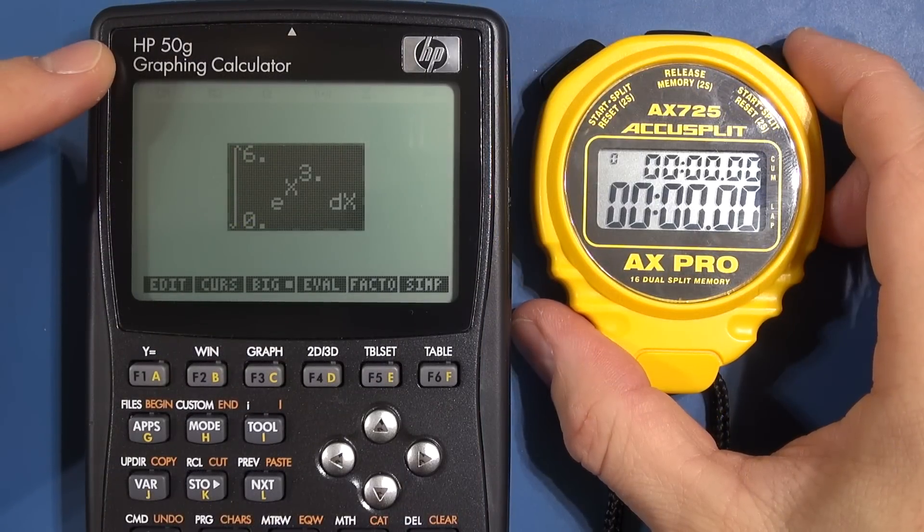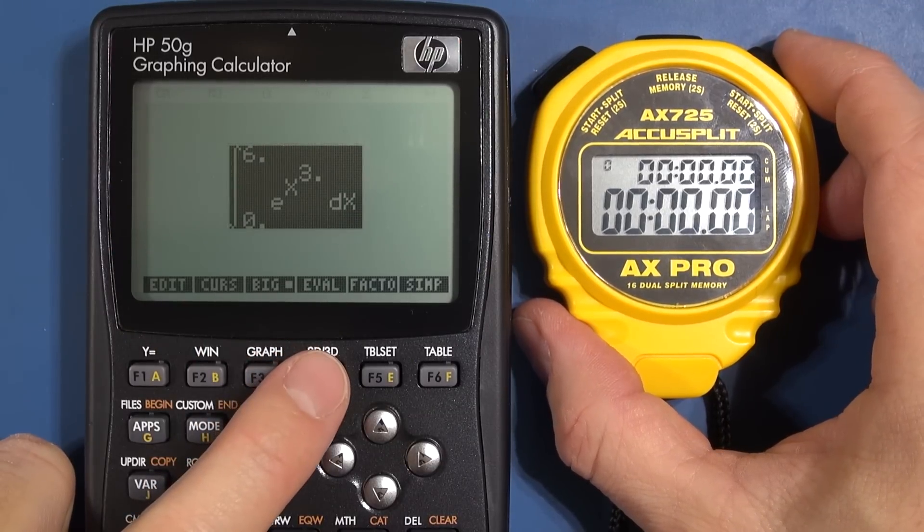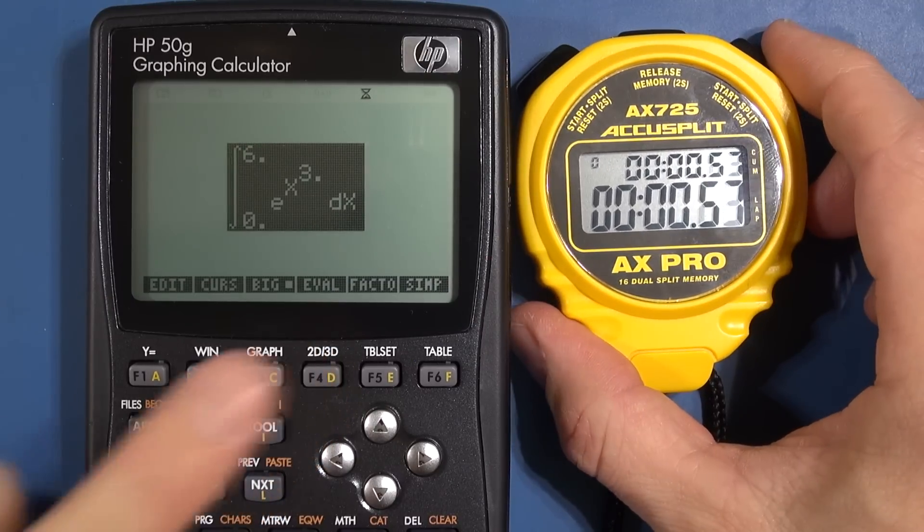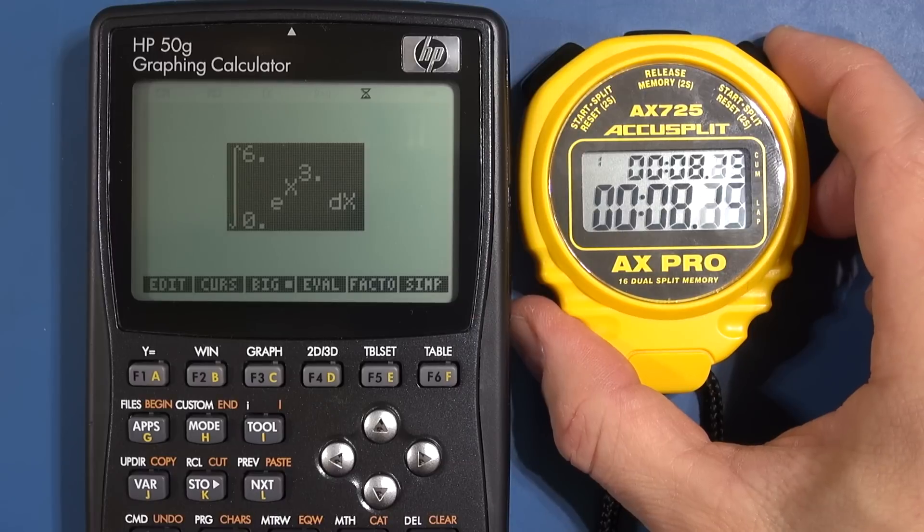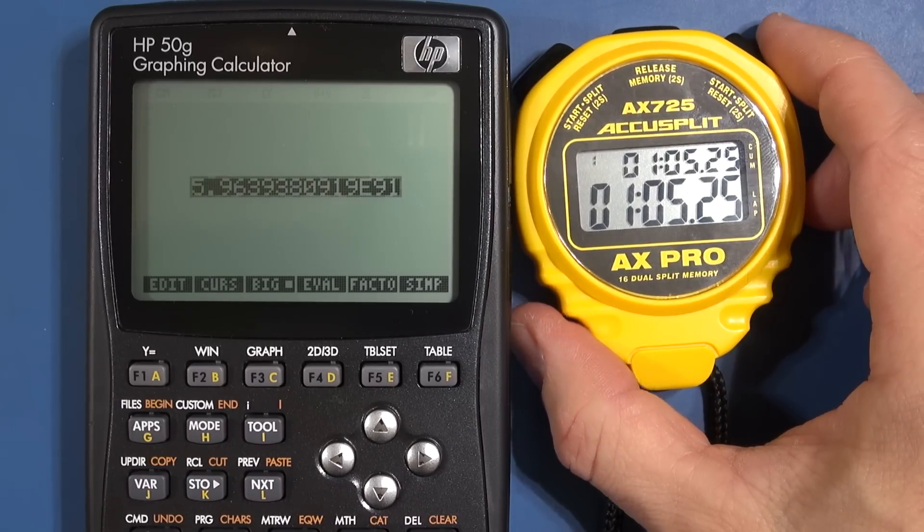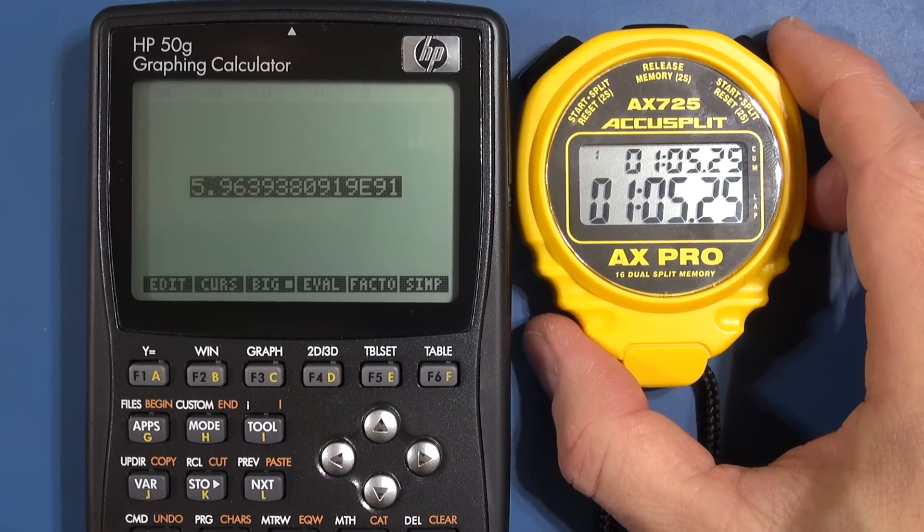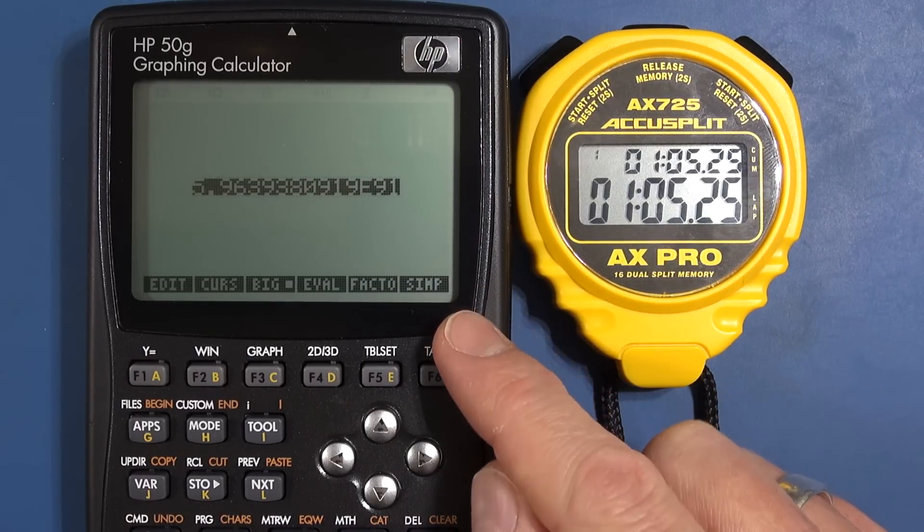Right next we have the HP50G. I have the function ready to test. I'm going to click on evaluate and then I'll start the timer. There we go. You can see the hourglass in the top there. There we go. So it's finally come up with an answer. One minute five seconds. I was very surprised at the performance of the HP. I expected it to be better.